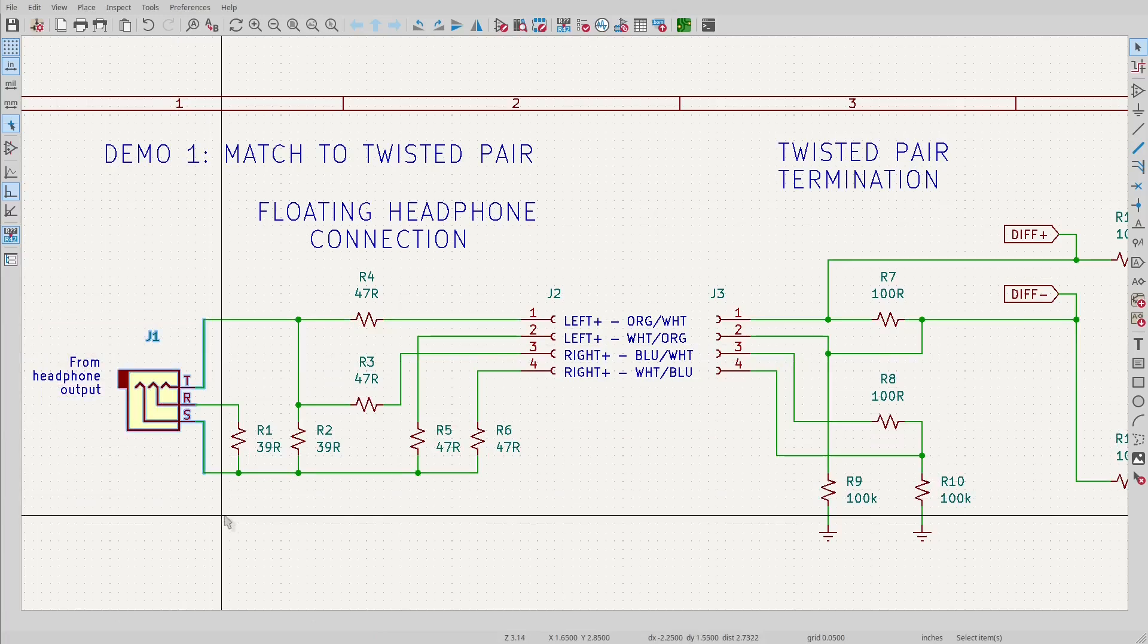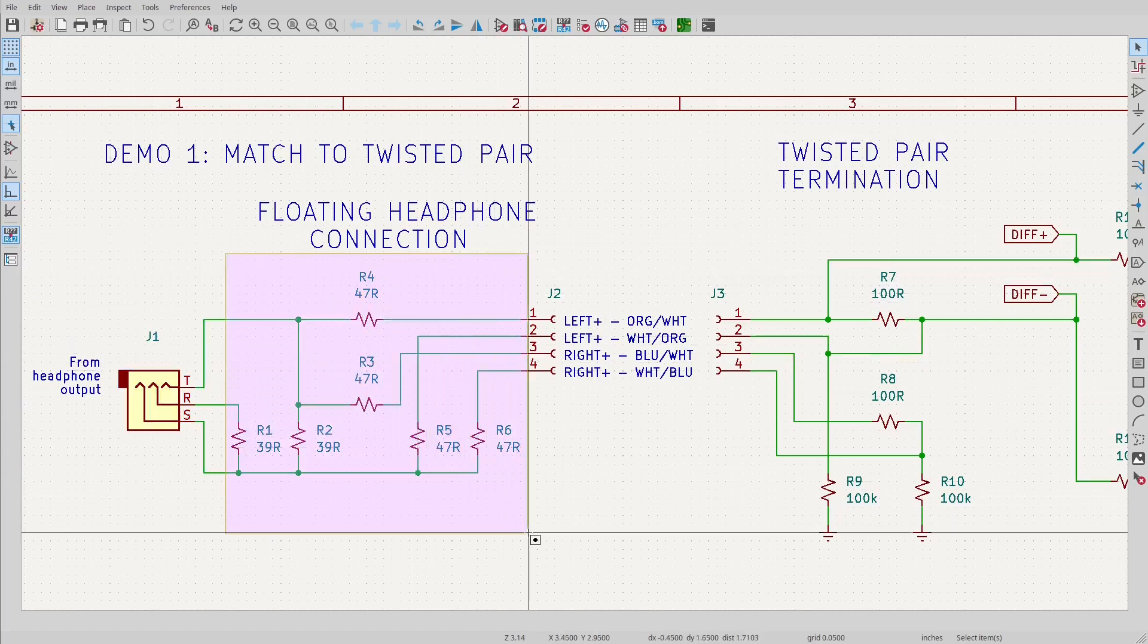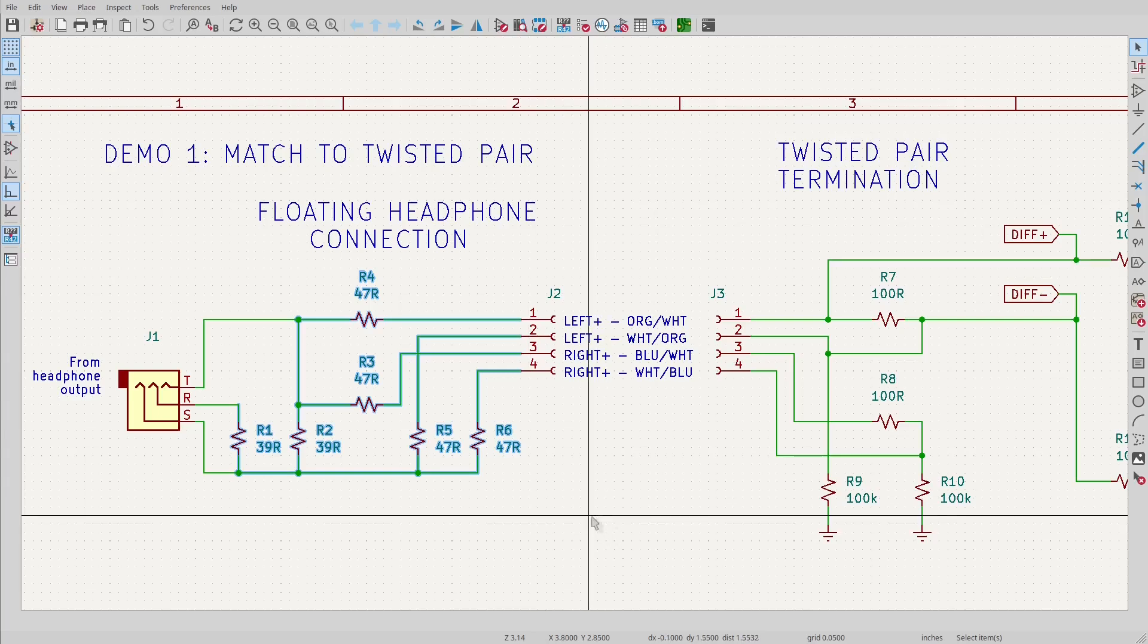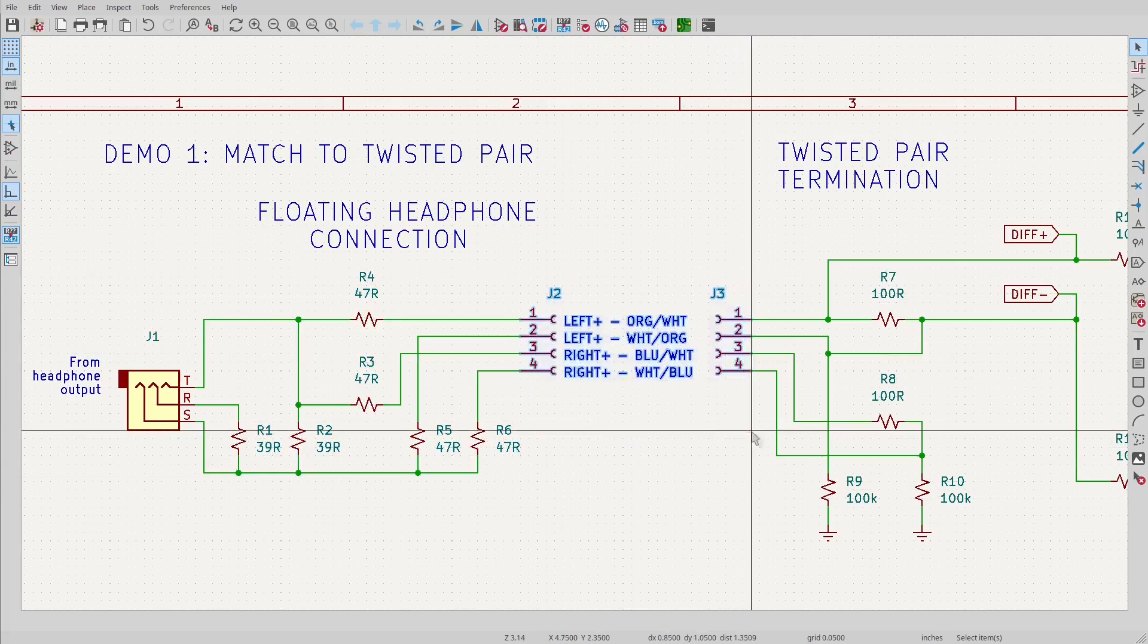I have no idea what the phone's idea of ground is, other than that the sleeve of the headphone jack is probably grounded. I've got a bunch of resistors that serve to give the headphone jack the 32 ohm load that it expects, and drive an output with an output resistance of about 100 ohms. I'm running the signal through a few feet of unshielded twisted pair. I know that's a dreadful idea, but bear with me here.